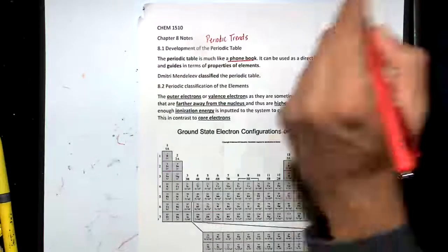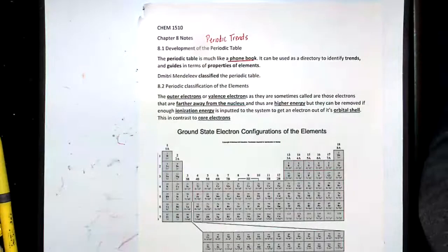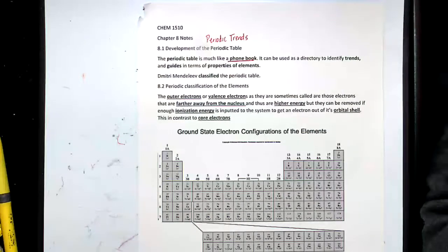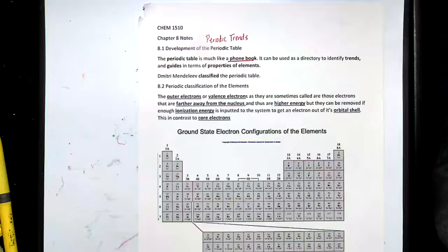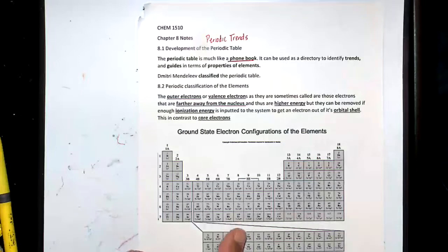Before you were born, there was something called a phone book. They used to give them out for free with yellow pages and white pages that would list all the businesses and addresses so you could look up people on the phone book.